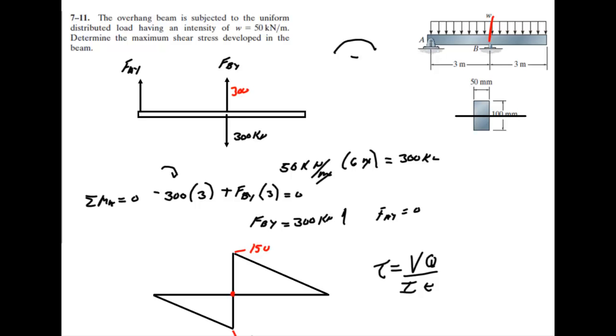This would be the Q value right here for the upper one. You find the area: 0.05 times the thickness, which is 0.05 also, times the distance from here up to the center, which is 0.025. If you run that value, you'll find it's 6.25 times 10 to the minus 5. That's your Q.